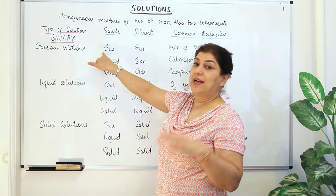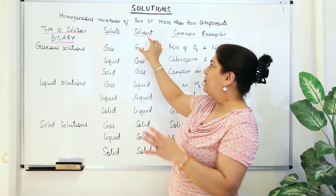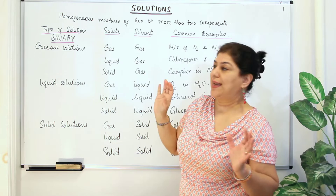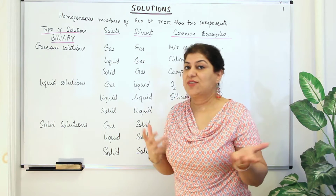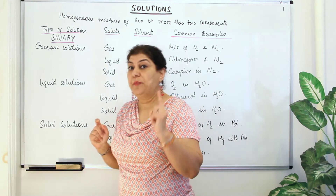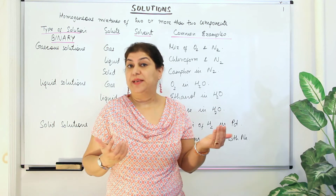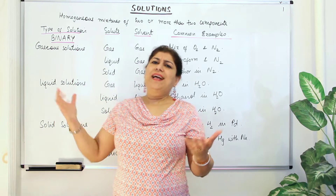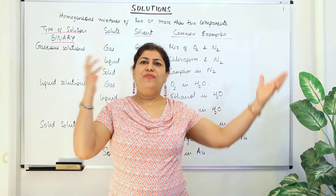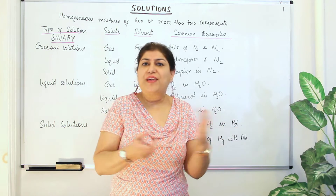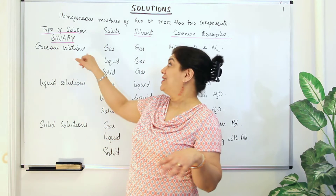In gaseous solutions, the solvent is always a gas. The first type is gas in gas — a very common kind of mixture. Air itself is a gas-in-gas mixture, as it contains different gases mixed together and you cannot see the individual components. For binary solutions, a specific example would be oxygen dissolved in nitrogen.